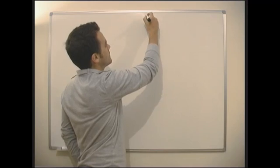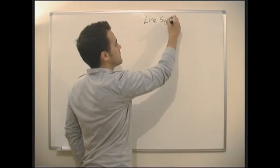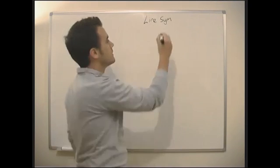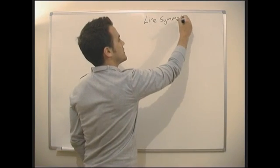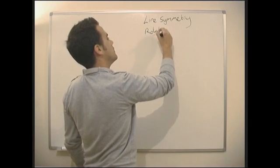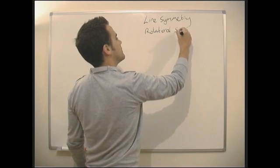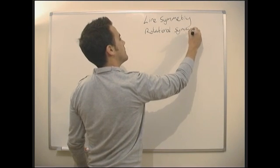The one where you put the mirror down is called line symmetry. And you've also got the one where you rotate it, which bizarrely is called rotational symmetry.